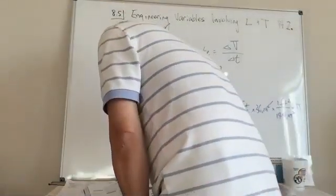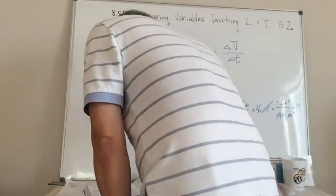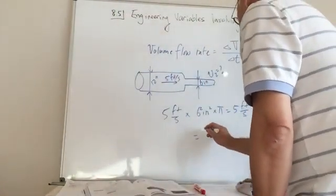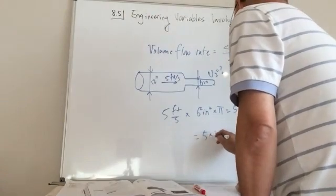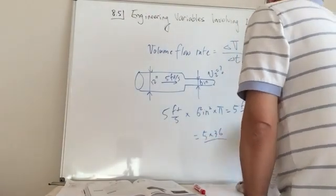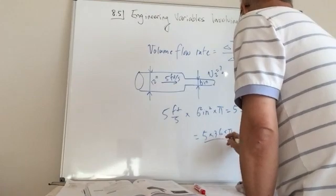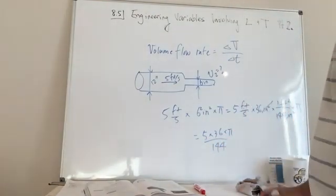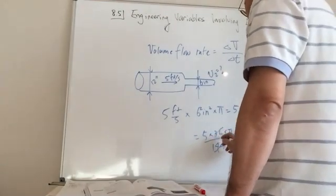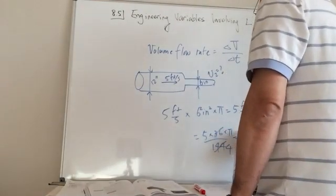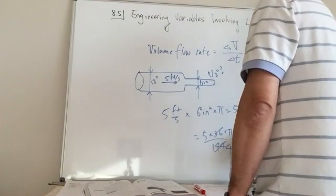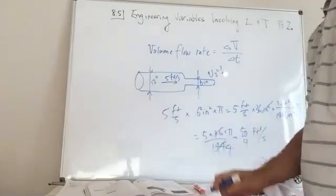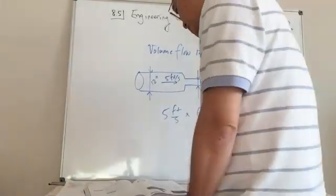Feet cubed per second — that's what they asked for. I'm going to get 5 times 36 pi over 144, which simplifies. 36 over 144 is one-quarter, so I get 5π/4 feet cubed per second. That's your answer.